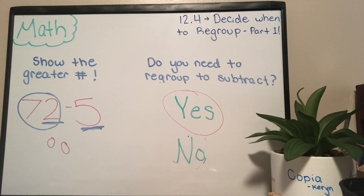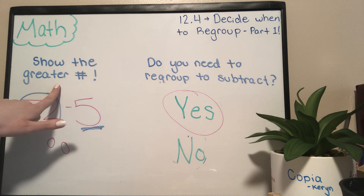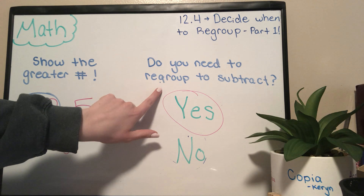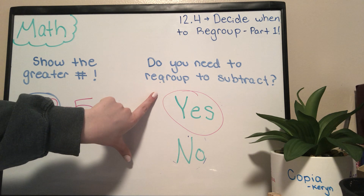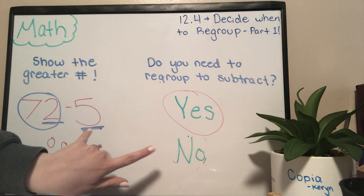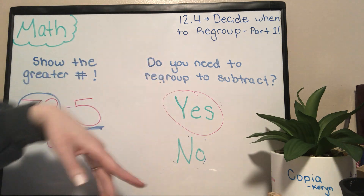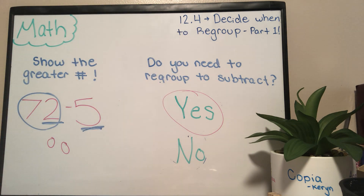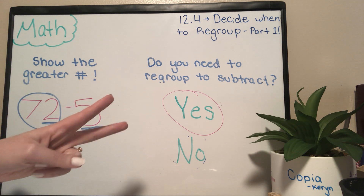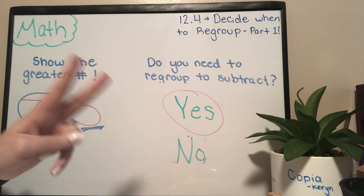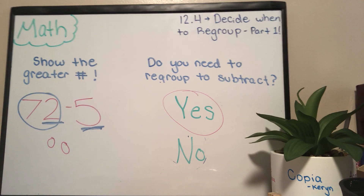Keep on working in that practice book. Remember, you're only doing the show the greater number column and the do you need to regroup to subtract column — just those two first columns. We are doing subtract the ones and how many tens and ones and what is the difference later. Give yourself a kiss on the forehead and a pat on the back, you smart second grade kid. I love you lots and I miss you so much — I'll see you soon. Thanks!